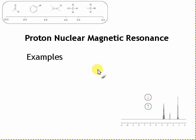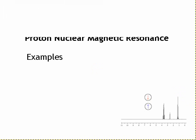A final example, working out the structure as we go along. Bear in mind, you'd usually have the mass spec and the IR, but in this case, we'll just go with the NMR spectrum.